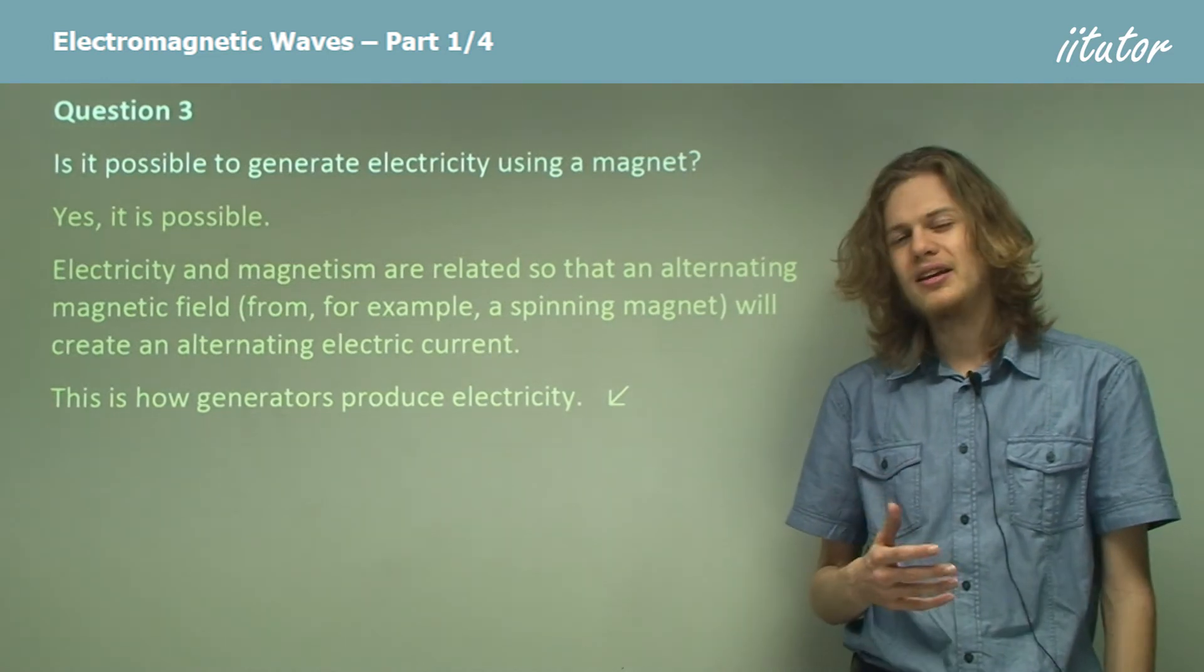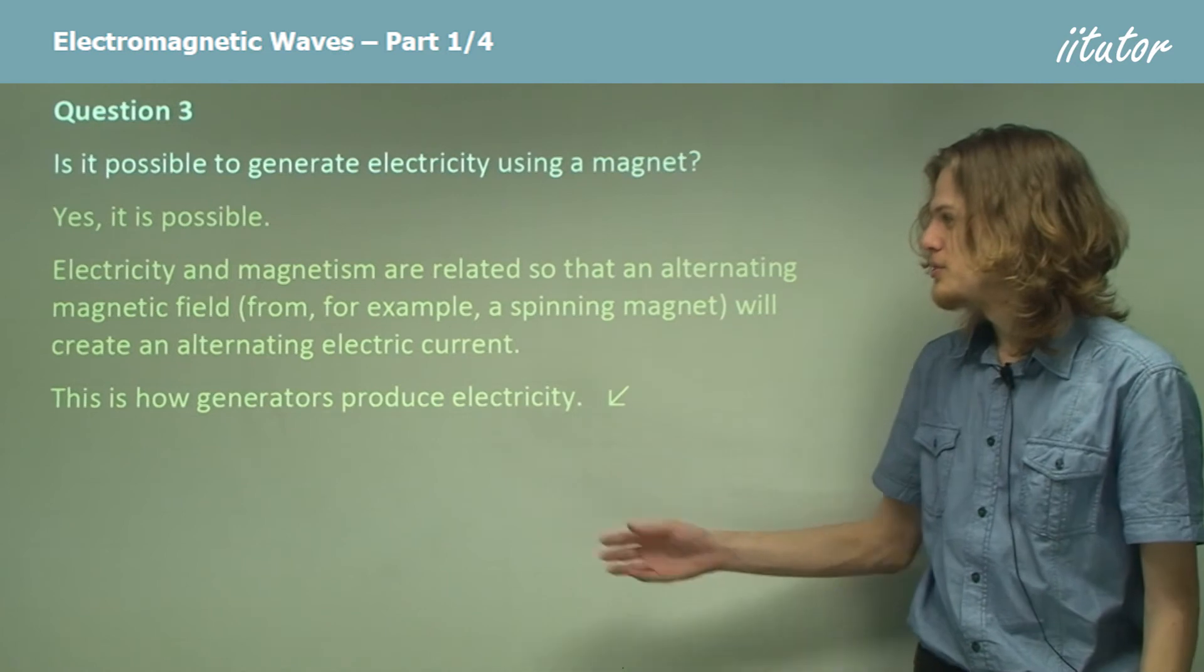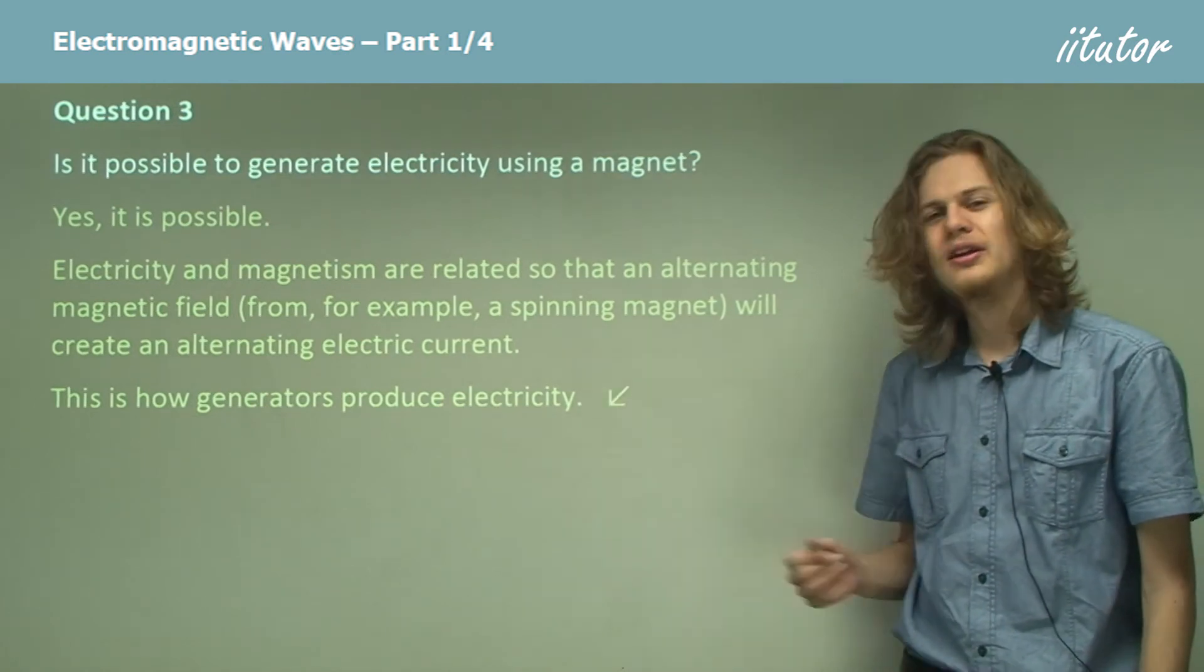The mains power is alternating back and forth at 50 hertz because the magnet that produces the current is spinning at 50 times a second.